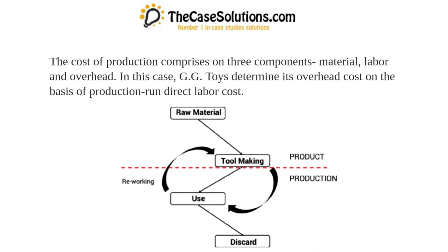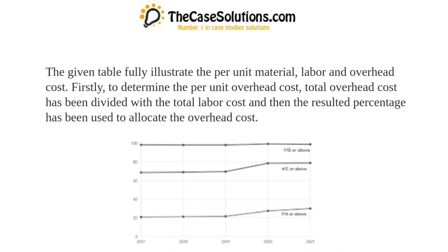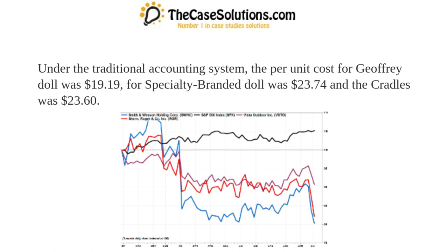For unit cost computation, the cost of production comprises three components: material, labor, and overhead. GG Toys determines its overhead cost based on production run direct labor cost. To determine per unit overhead cost, total overhead cost is divided by total labor cost, and the resulting percentage is used to allocate overhead. Under the traditional accounting system, the per unit cost for Jeffrey doll was $19.19, for specialty branded doll was $23.74, and for cradles was $23.60.